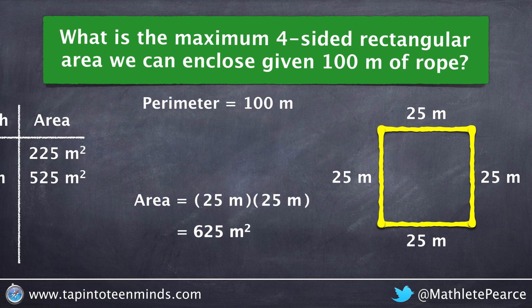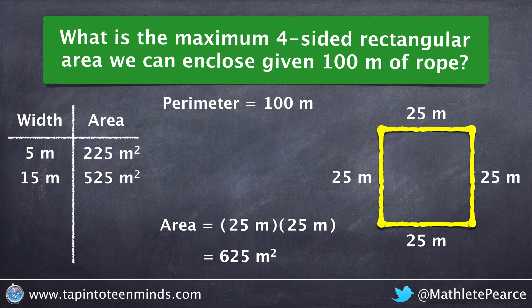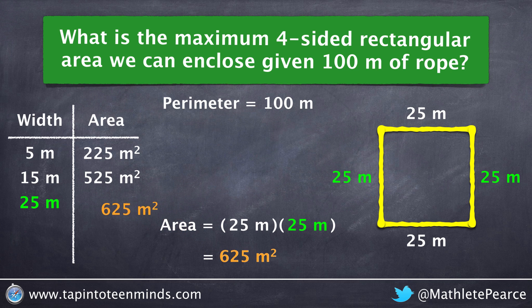Going back to our relationship between width and area, we can see that when the width is 25 meters, our area has increased again to 625 meters squared.